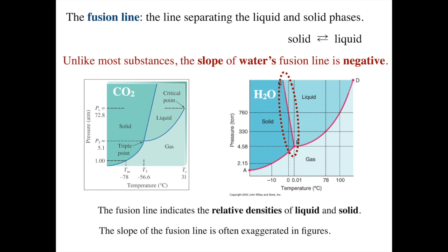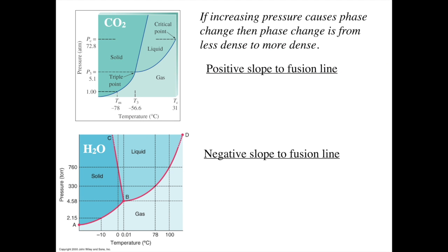The fusion line indicates the relative densities of the liquid and solid phases. What does that mean? I often remember it like this. If you were to increase the pressure and cause a phase change, that would be because you crossed the fusion line. If you do that, increase the pressure and cross the fusion line to cause a phase change, what you're doing is changing the phase from the less dense to the more dense. If you put high pressure on a phase and it can collapse into a phase with greater density, that means the mass can be occupying a smaller volume, it will do so in response to that pressure.